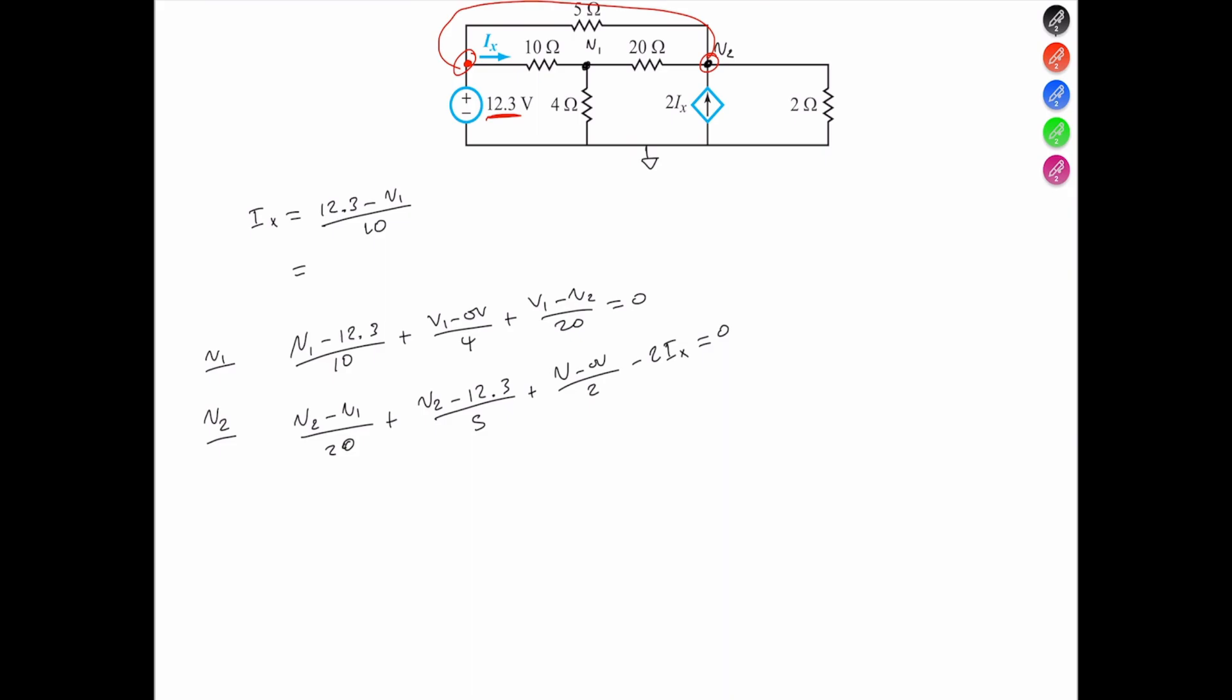Thus, you would solve them simultaneously, and V1 is then equal to 3.8 volts, and V2. We don't need V2 in this case, but if you solve them simultaneously you're going to get V2, so 5.8 volts.